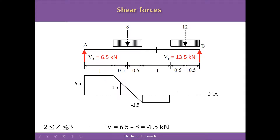In the interval from 2 to 3, the only shear forces to the left are 6.5 minus 8 = −1.5 kN, so the shear force distribution is constant at −1.5 kN between 2 m and 3 m. Between concentrated forces the shear distribution is constant, whereas under a UDL it is linear.